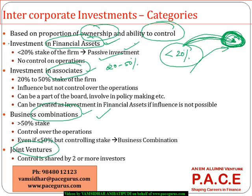With less than 20 percent, you have invested passively — just to earn some returns or as a simple diversification. Your stake is a minority stake and you don't have any controlling or influencing stake on the operations of the firm. When we talk about 20 to 50 percent, generally you can influence the operations of the firm but not control. Influence means you can have members on the board and get involved in policy making, but you cannot control because you don't have more than 50 percent.